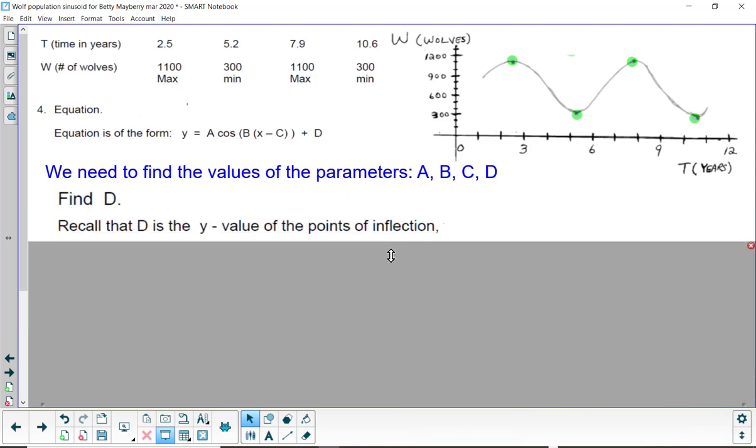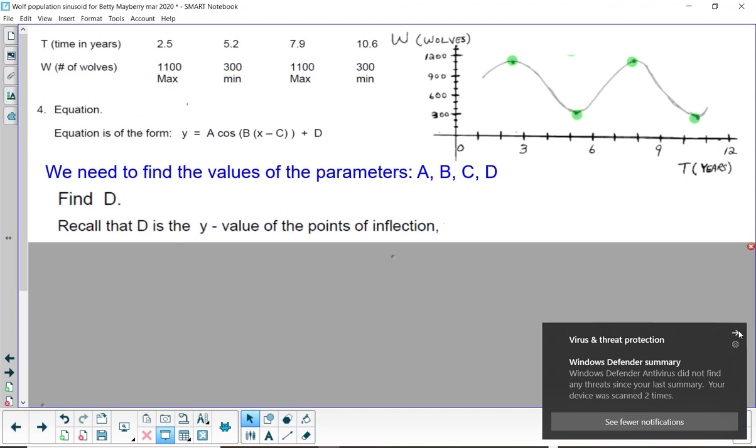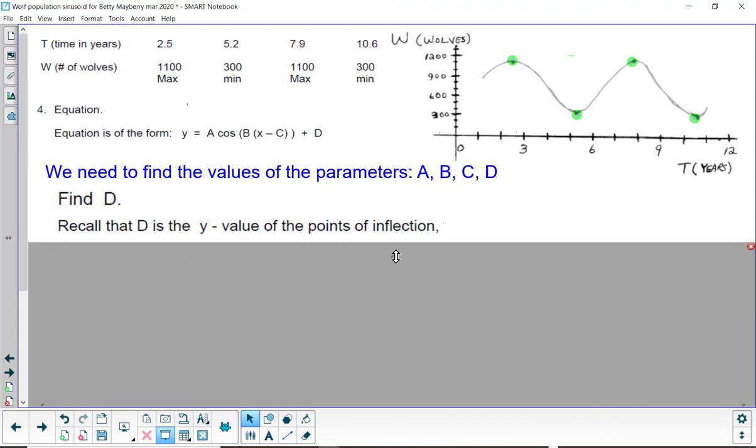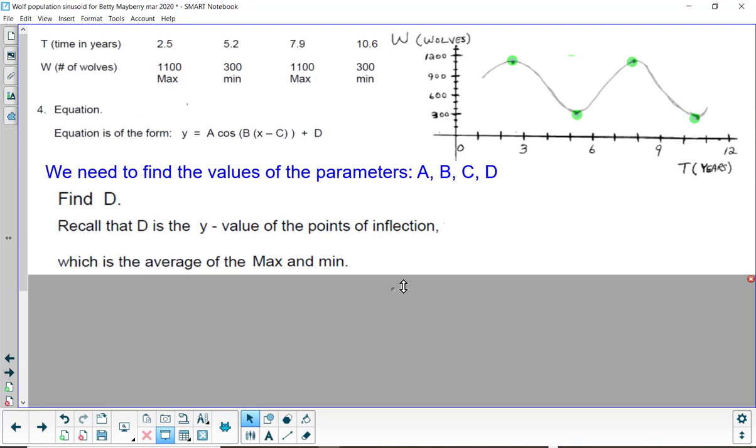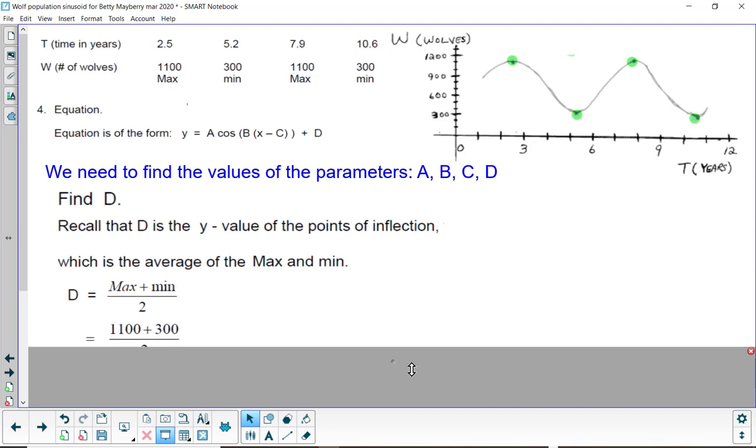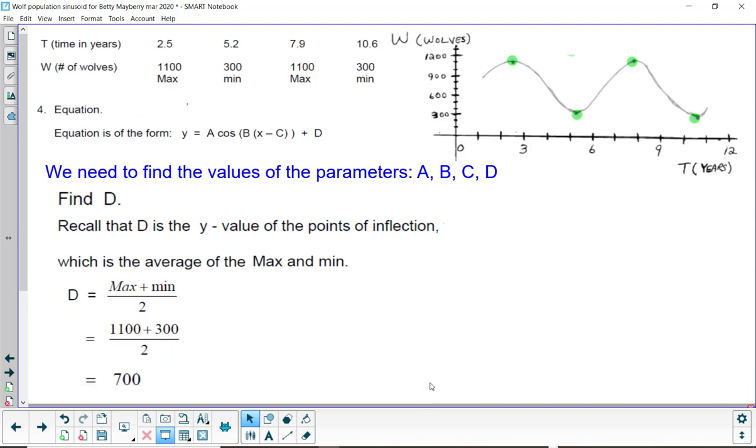And finally, parameter D. D is the Y value of the points of inflection, which is the average of the max and min, the average of these two numbers. So, we add them up and divide by 2. And when we do that, we get D to be 700.